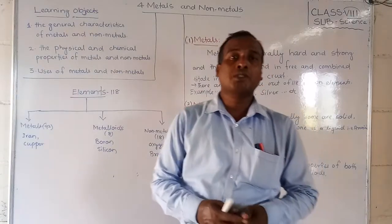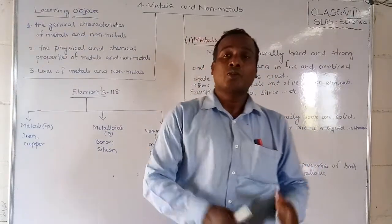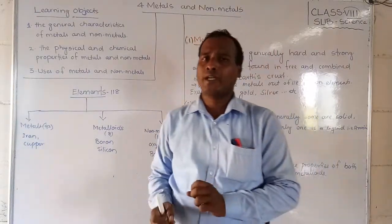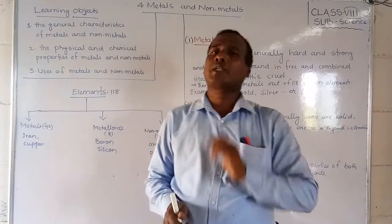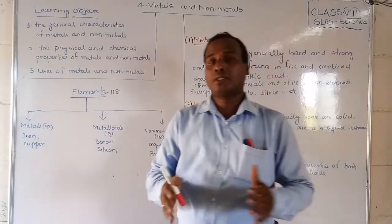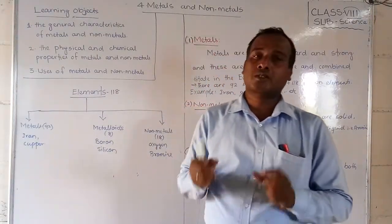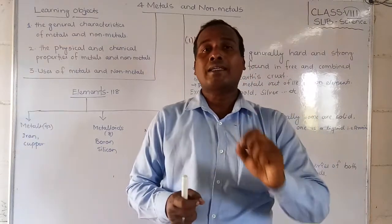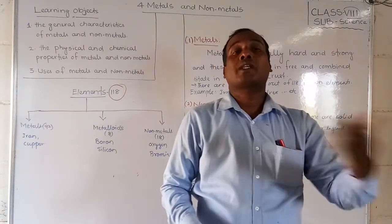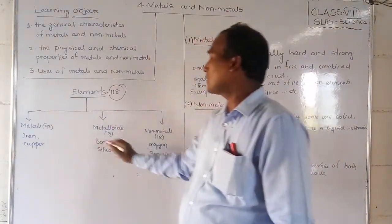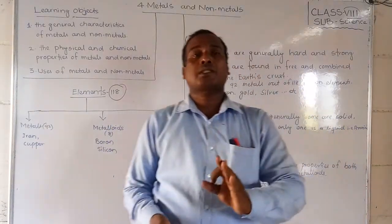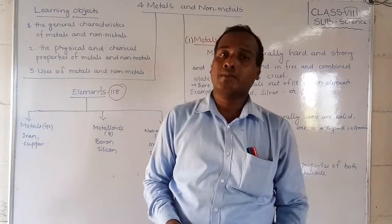Now let's look at the introduction. Those 118 elements that have been discovered are divided into three categories. In higher classes, in 10th class, we will study periodic classification in detail. But today I'm going to introduce this topic. The 118 elements are classified into three categories: some elements are metals, some are non-metals, and some are metalloids.